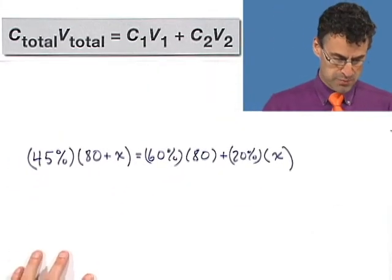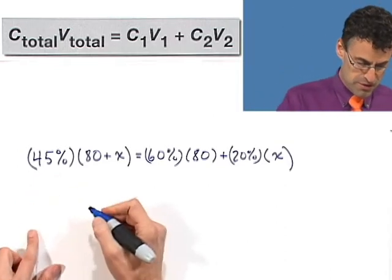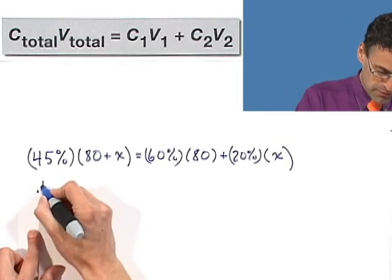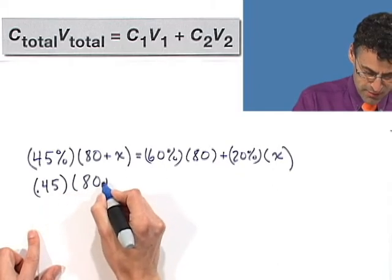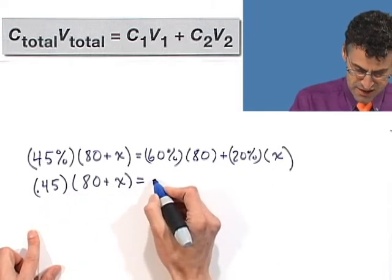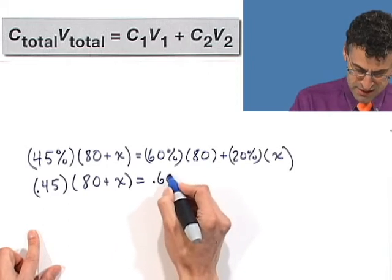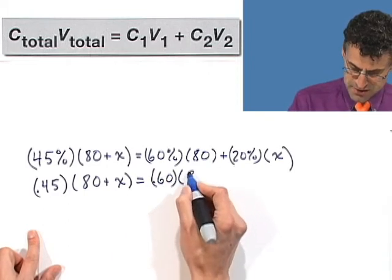And so, how do we solve this? Well, 45%, of course, you know that just means .45. And so we can just now write everything else. 60% is .6 or .60 if you'd like. Either way is correct. 20% is .2 or .20 times x.